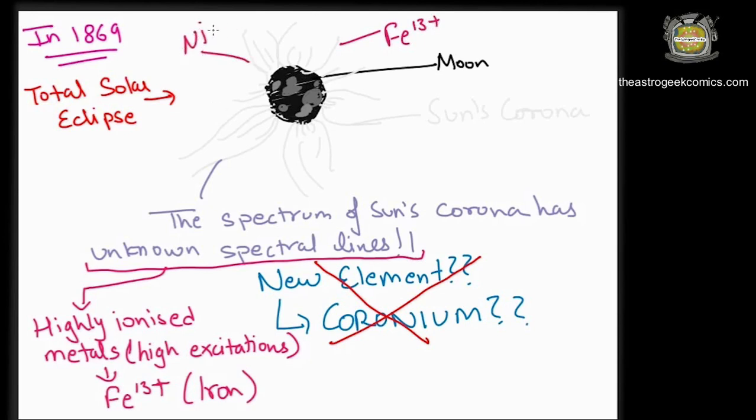Later, similarly high ionized states were discovered for nickel and calcium too. So, what does an absorption spectrum of a star look like? Well, in visible light, it looks like the absorption spectrum which has the absorption lines on the background of the vibgeor.